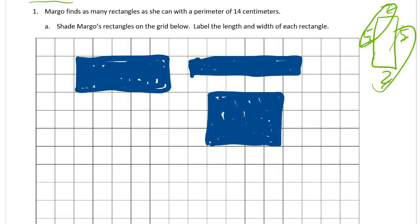So yeah, because we already have the five by two, right? So label the length and width of each rectangle. These are centimeters, right? So this is two centimeters by five centimeters and one centimeter by six centimeters. And this is four centimeters by three centimeters.